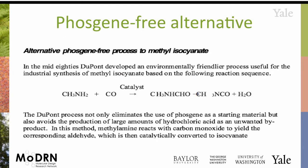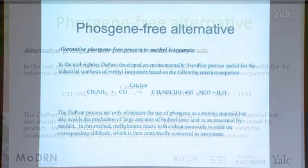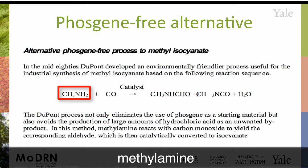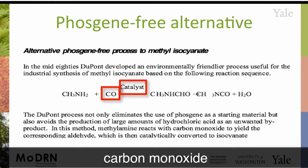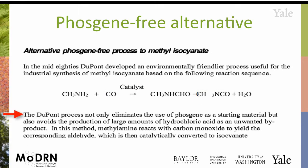DuPont, led by a colleague named Leo Manzart, came up with an alternative after the Bhopal incident: they decided not to use phosgene anymore. They developed a catalyst so that you can use carbon monoxide instead — which, while deadly, looks good by comparison to phosgene. You start with methylamine, use carbon monoxide and a catalyst, and you get methyl isocyanate — completely eliminating phosgene from the equation.